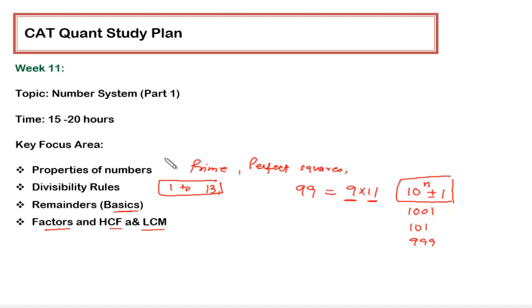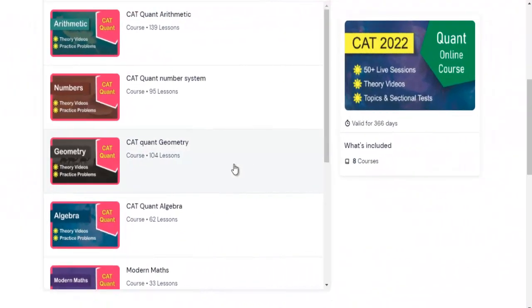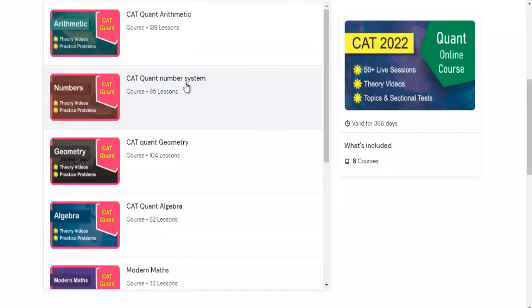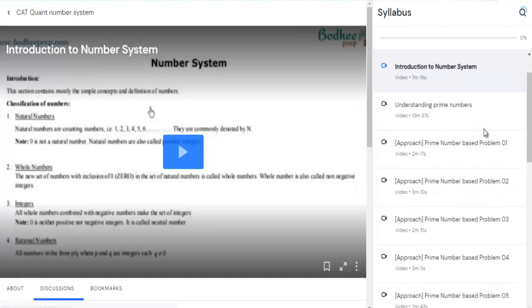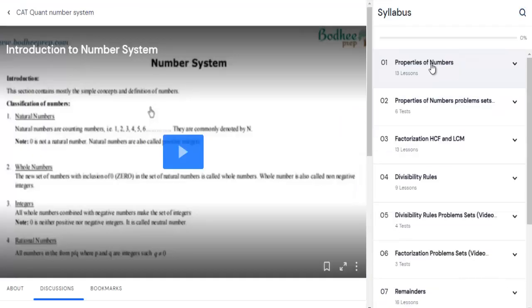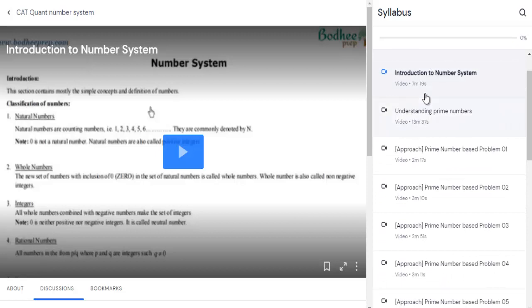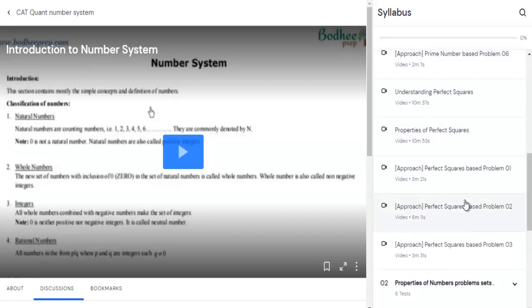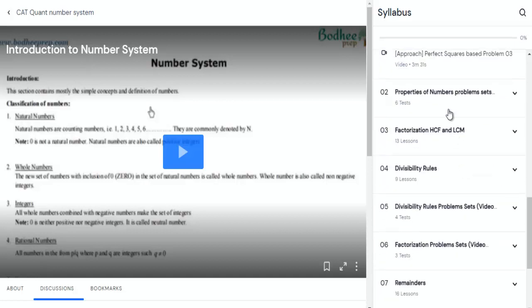You have to go to the CAT quant number system. You can see that the second folder is for CAT quant number system and here you have to do properties of numbers. As you can see, all the properties, introduction to number, understanding prime number - there are different types of questions based on prime numbers and what should be our approach, so all the approaches are given. Then about perfect square, again the approaches for perfect squares are given, and then there are practice problems on properties of numbers.